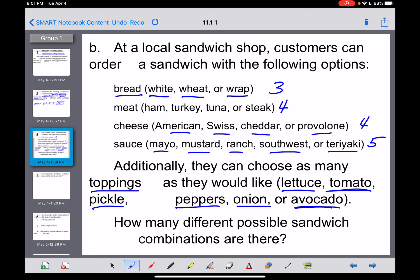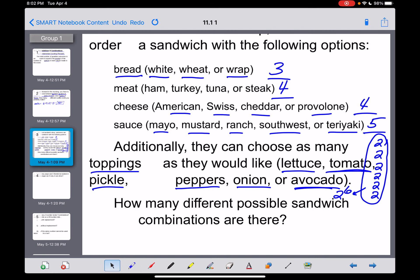There are one, two, three, four, five, six different toppings that you could put on that sandwich. Each one of those is a yes or no question. Do you want lettuce? Yes or no. So there's two options there for lettuce. Do you want tomato? Yes or no. Two options for tomato. Same for pickle, same for peppers, same for onion, same for avocado. So I'm going to multiply the three times the four times the four times the five, but then I'm going to multiply all of that by six twos, which of course would be much faster to type into my calculator as two to the sixth power.